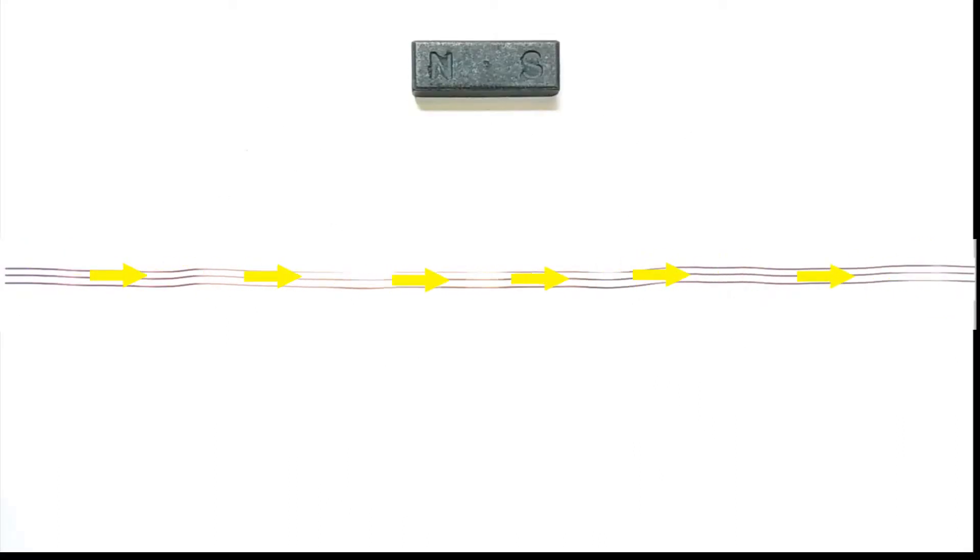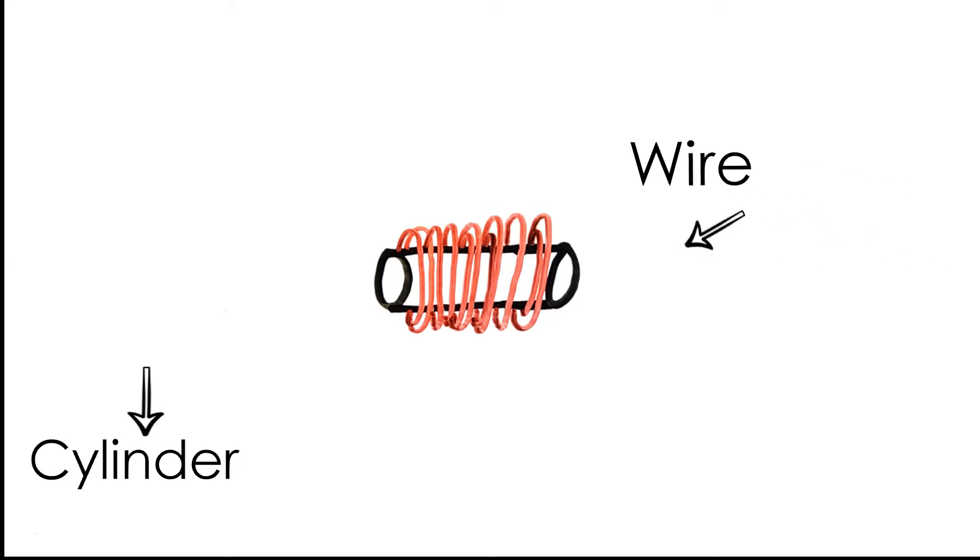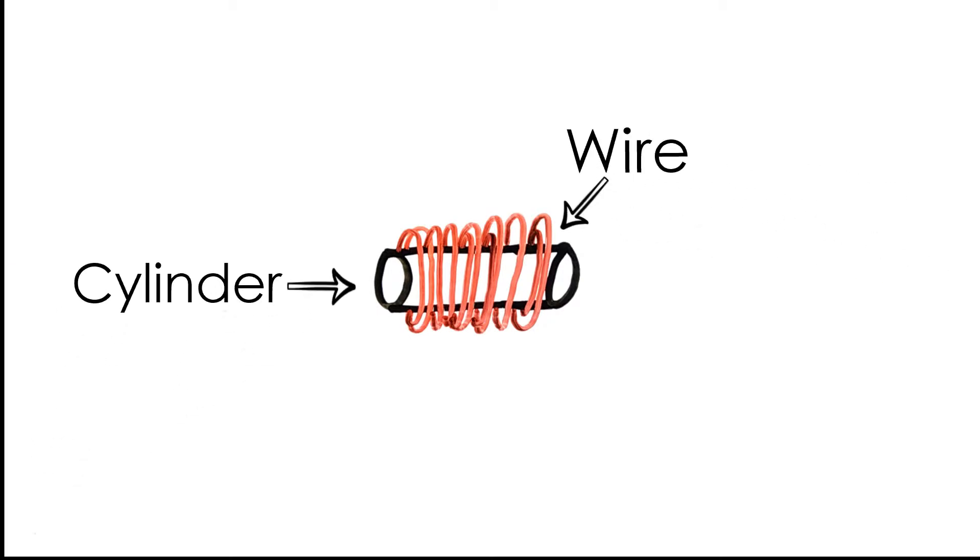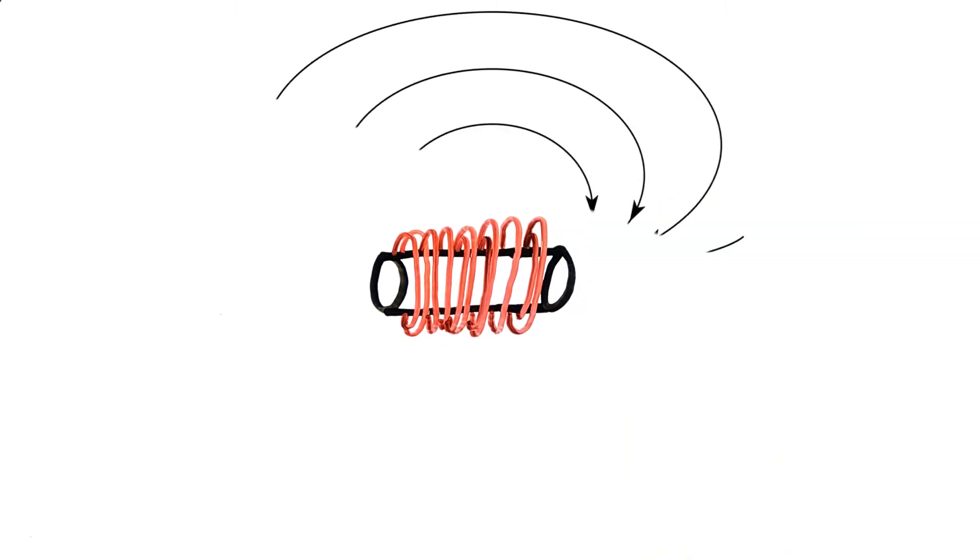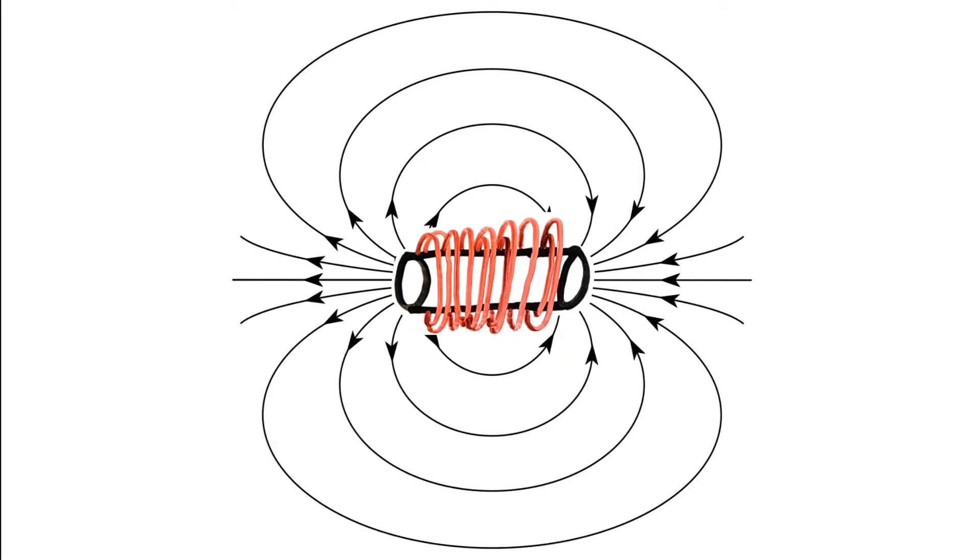What if you coil the wire around any type of cylinder and then pass electric current through it? It would create magnetic fields, but the field lines of this electromagnet are very similar to a permanent bar magnet, which means it does have north and south poles. This type of electromagnet is called a solenoid.